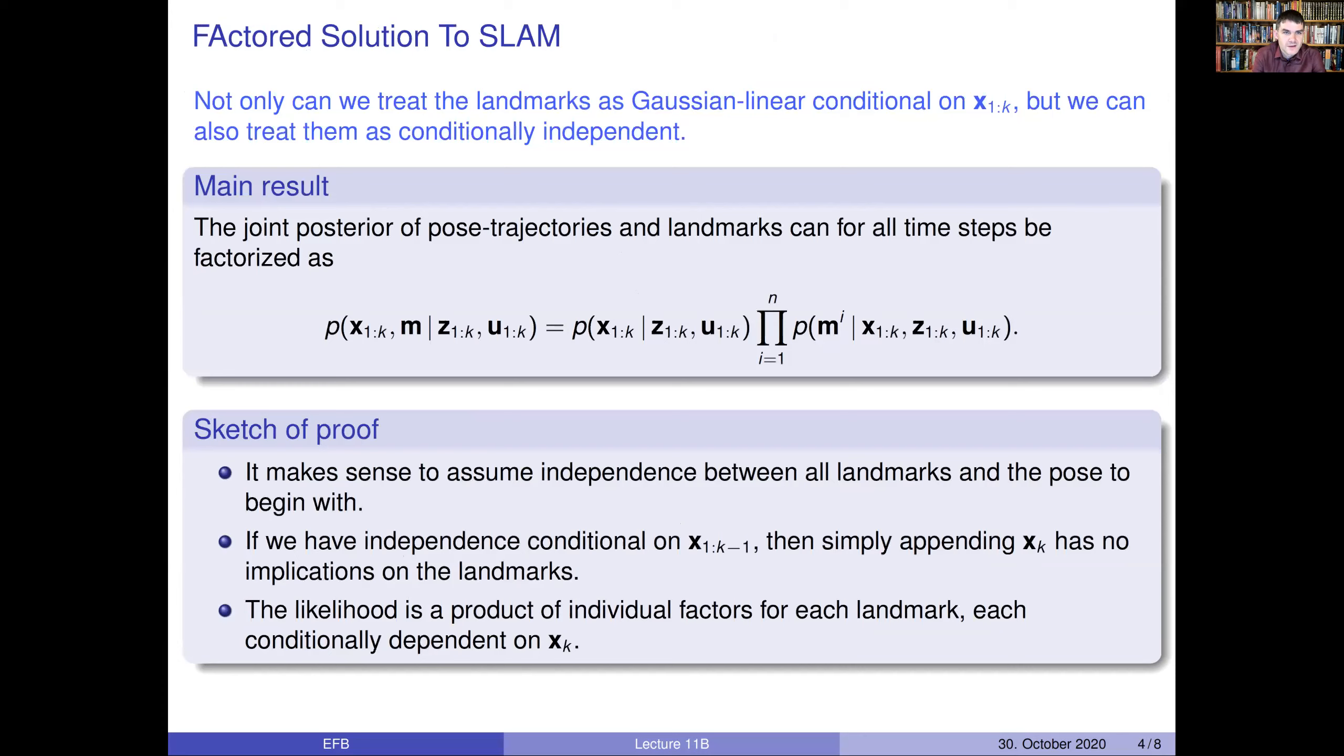So, then we get to the main idea of FastSLAM, which, by the way, is an abbreviation for factored solution to SLAM. The key idea here is to factorize the posterior of SLAM as much as possible. And to achieve that, we condition on the pose trajectory. What then can be shown, I'm going to show this again on the blackboard, it's a little bit complicated, though not very complicated.